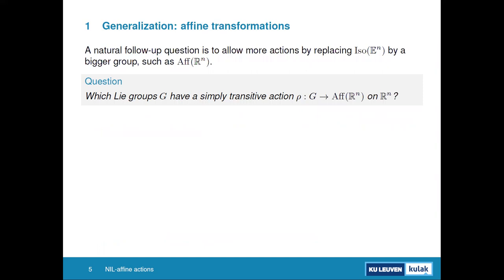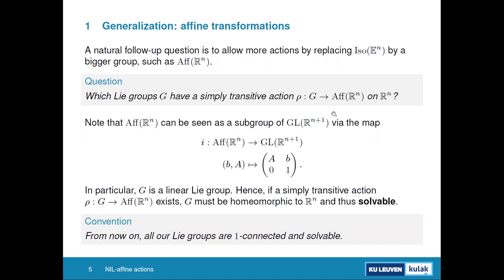You could generalize this by replacing isometries with affine transformations and ask: what Lie groups have a simply transitive action by affine transformations? The affine group embeds in GL(ℝⁿ⁺¹) via the standard map, so G is a linear Lie group. Since it is homeomorphic to ℝⁿ, it must be solvable. From now on we work with Lie groups that are both solvable and simply connected.